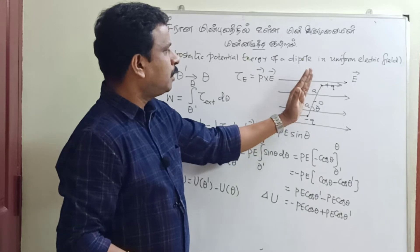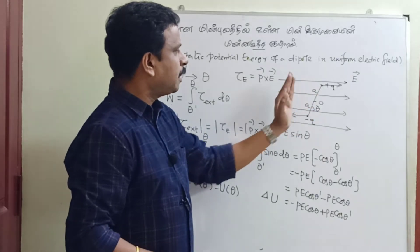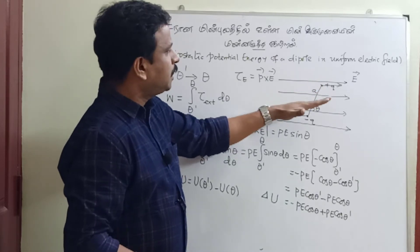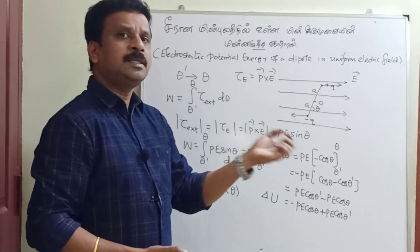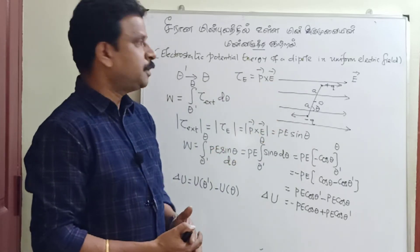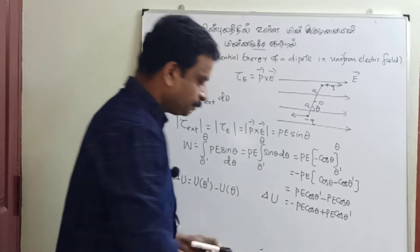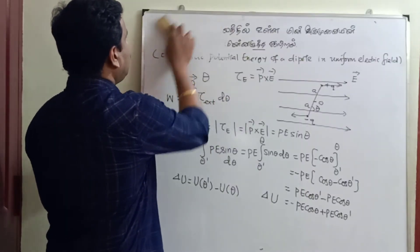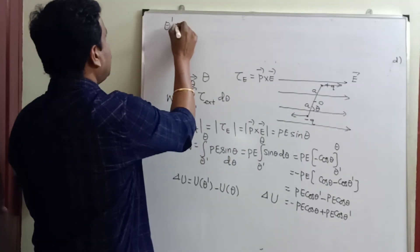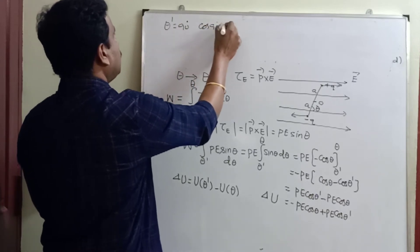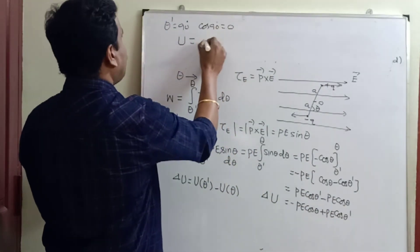Now we can set theta prime as the reference angle. Suppose theta prime is a perpendicular angle — that is, theta prime equals 90 degrees. The value of cos 90 is 0, so that term becomes zero.